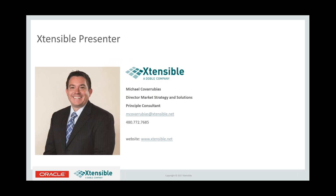I'm Michael Koberubius, with Extensible Solutions. Extensible is part of the Doble Engineering Company. I've been with Extensible for a little over a year, and prior to that I worked for one of the utility companies in the Southwest for nearly a decade. I have a dual role as a principal consultant, as well as overseeing the market strategy and the solutions that we put together and help deliver to our customers.